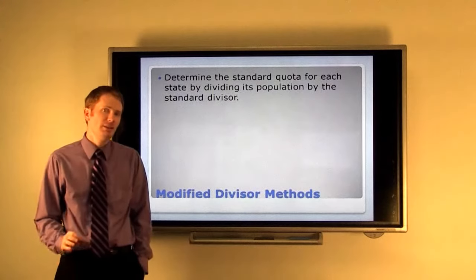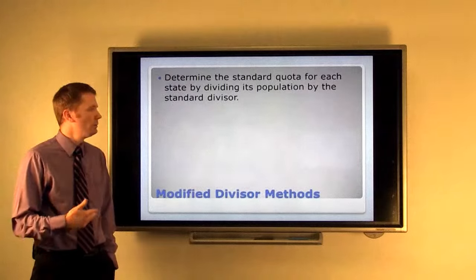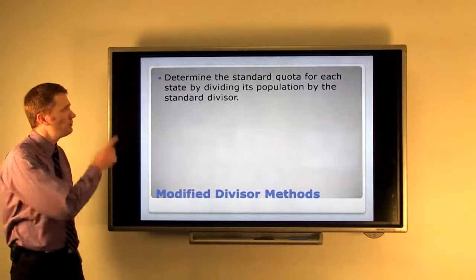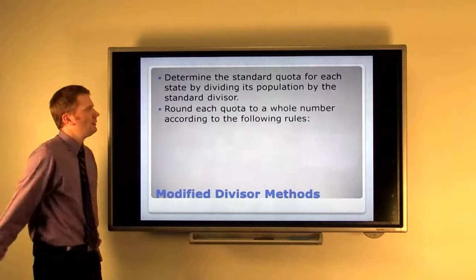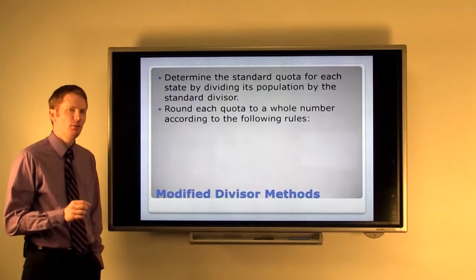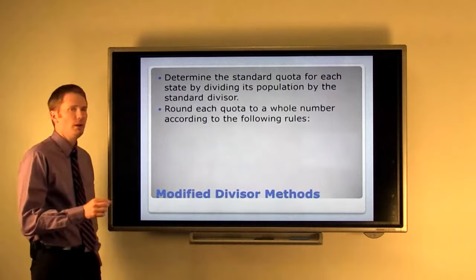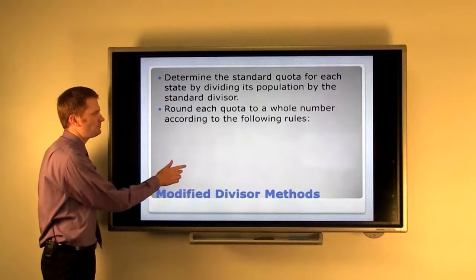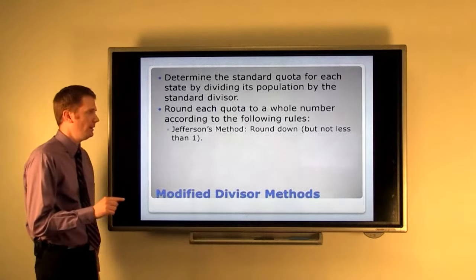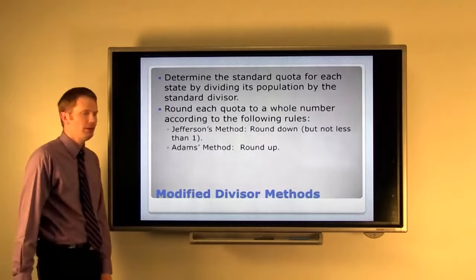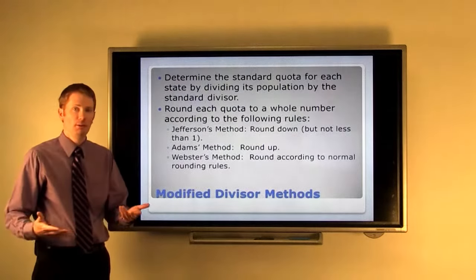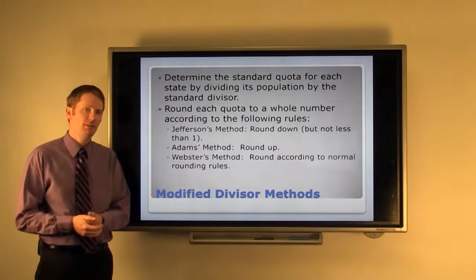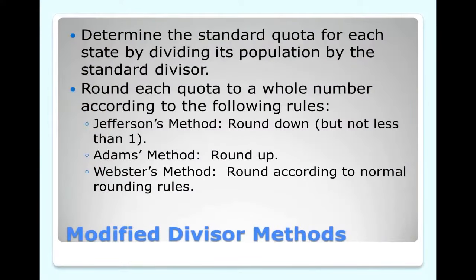So how do we go about using them? They're very similar so I'm going to tell you about all three at once and then we'll do all three with our data from the 1820 census. So we first determine the standard quota just like you would have if you were using Hamilton's method. Then how we choose to round is what makes these three methods different. Remember with Hamilton's method we always rounded down no matter what to the lower quota. With Jefferson's method we do round down but not less than one. With Adam's method we're going to round up and with Webster's method we're going to round according to the normal rounding rules.